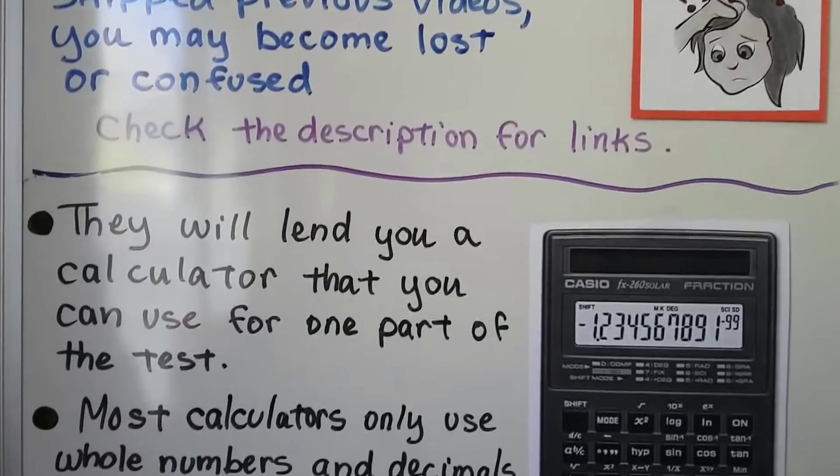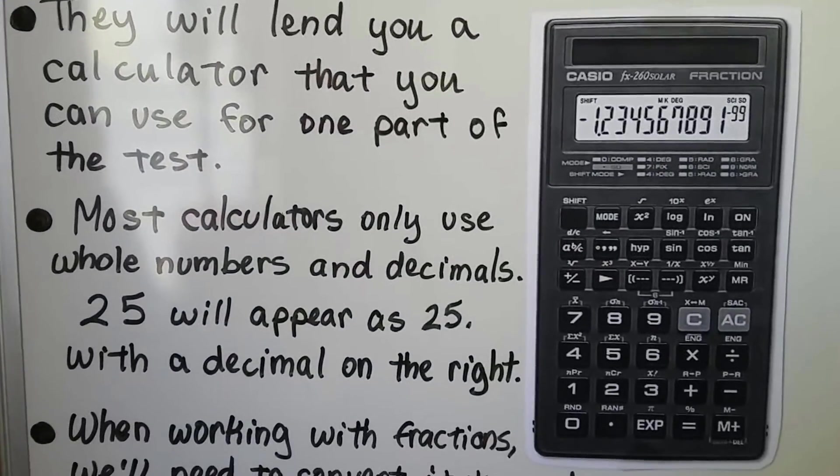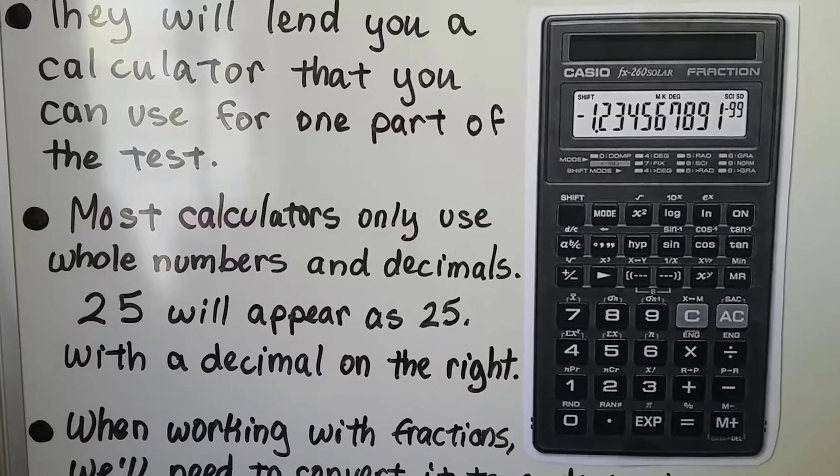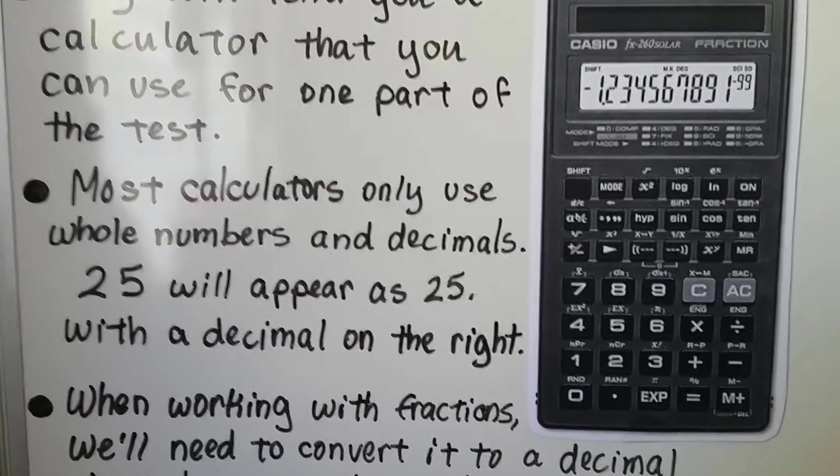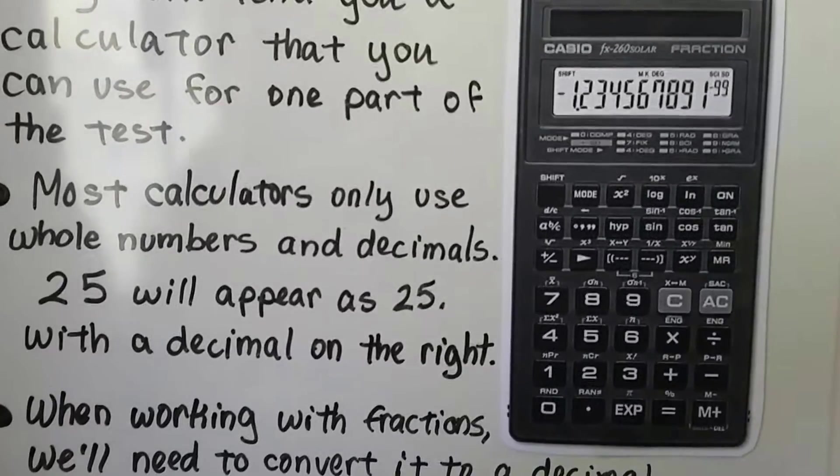So, we now know they're going to lend you a calculator that you can use for one part of the test. It's going to be probably like this Casio FX260. And most calculators use whole numbers and decimals, and you'll see it on the screen right here.